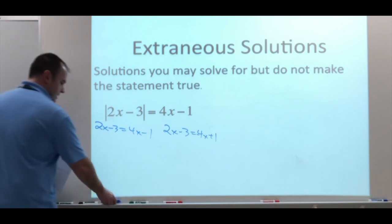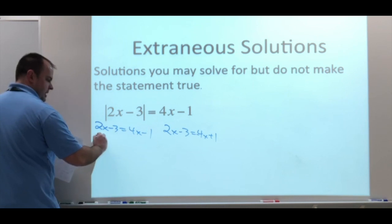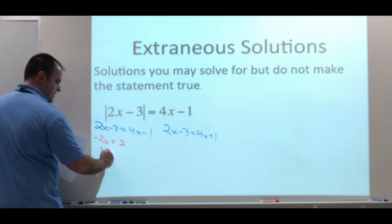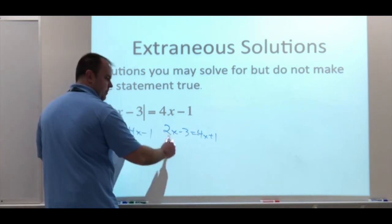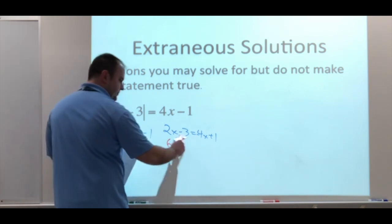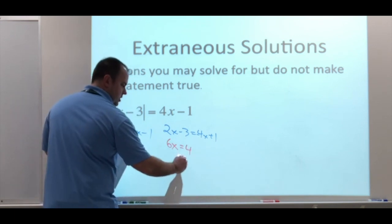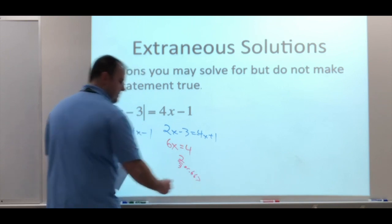Going through and solving this, bringing the 4 over gives us negative 2x, bringing the 3 over gives us 2, and we get x equals negative 1. Solving the other side, bringing that 4x over, adding it, we're going to get 6x. Bringing the 3 over gives us 4, so we're going to end up with 2 over 3, or 0.667.